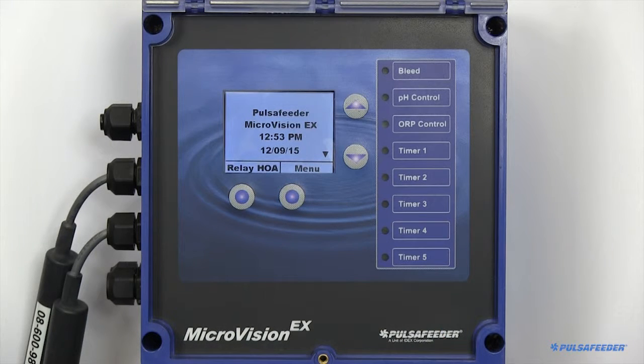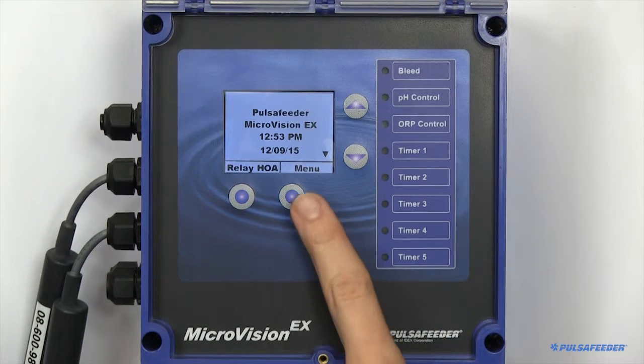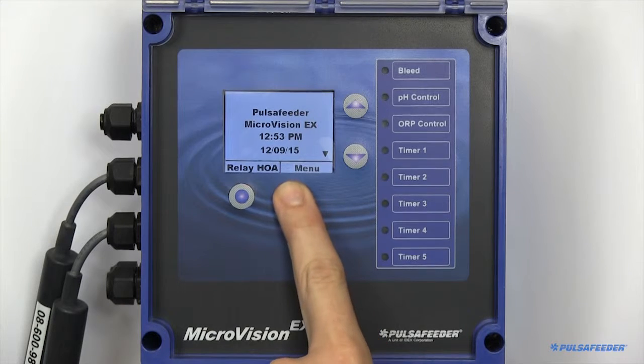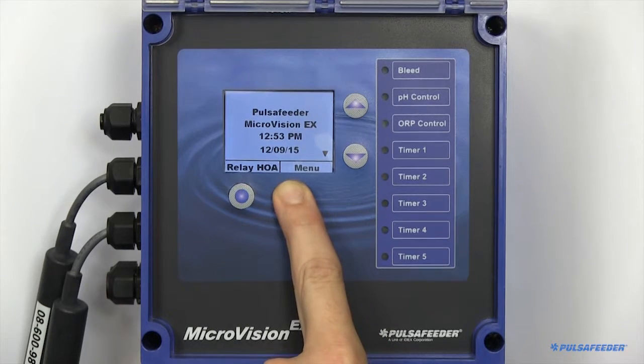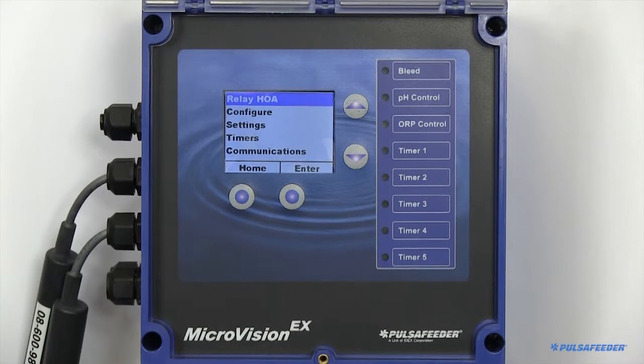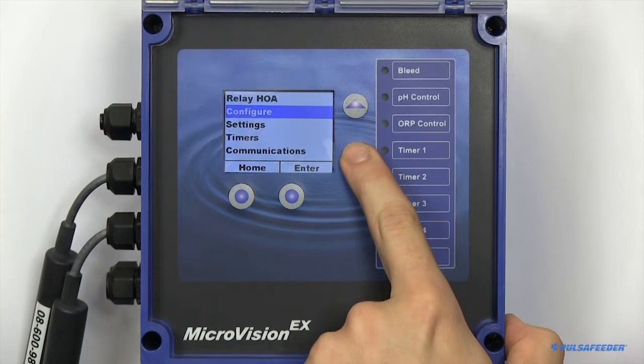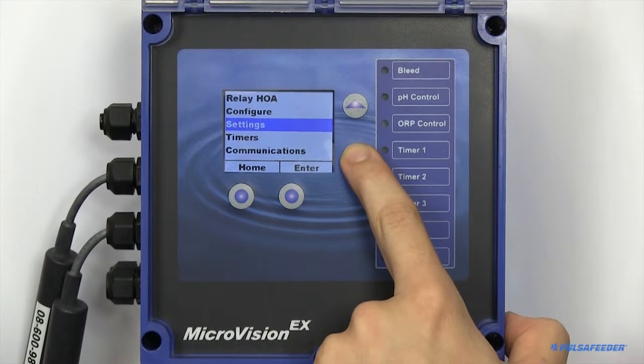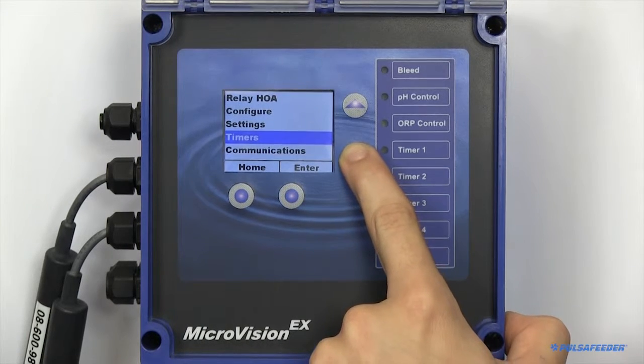Accessible from the home screen is the menu. You can reach this by pressing the bottom right button. Featured on the menu screen is access to the relay HOA, configure options, your settings, timers, as well as communications.